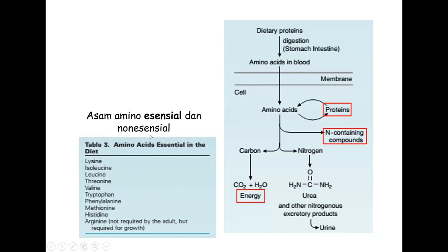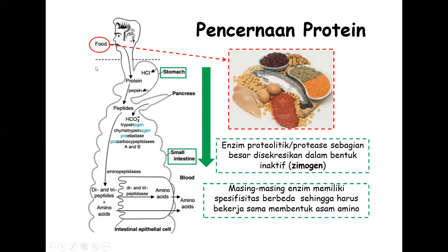Asam amino non-esensial seperti glutamat dan aspartat bisa dibentuk sendiri oleh tubuh melalui reaksi aminasi. Pencernaan protein baru terjadi setelah makanan memasuki lambung, dengan bantuan HCl yang dihasilkan sel-sel lambung. HCl menyebabkan protein terdenaturasi, kemudian dibantu pepsin yang sudah diaktifkan HCl, sehingga protein dipotong menjadi peptida-peptida yang lebih kecil. Setelah sampai di usus halus, enzim-enzim protease dari pankreas—yaitu tripsinogen, kimotripsin, proelastase, dan prokarboksipeptidase—membantu pencernaan lebih lanjut.